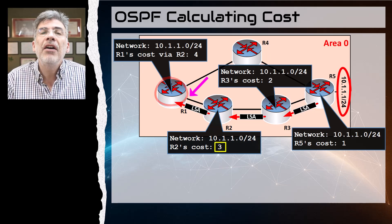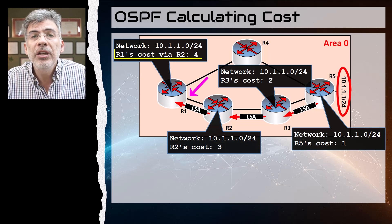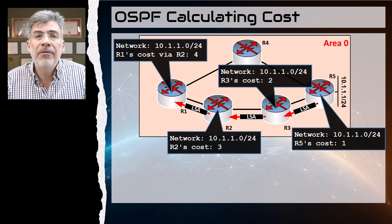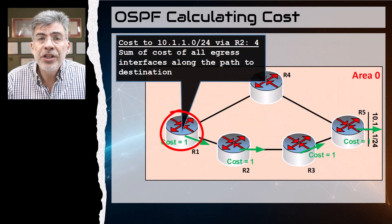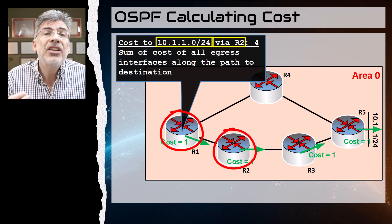And R1 adds its own cost of its destination network-facing interface, which is one, for an accumulated cost of four. The result is, as we saw before, R1 learns about the destination network of 10.1.1.0/24 via R2.